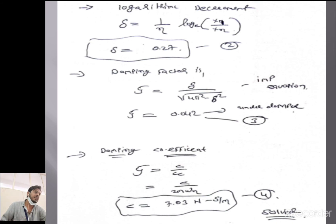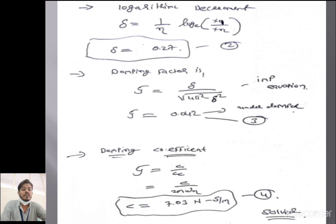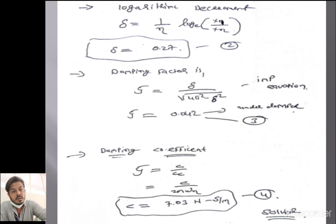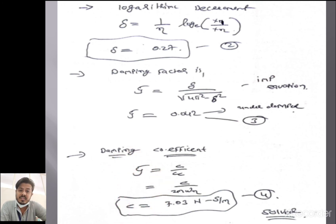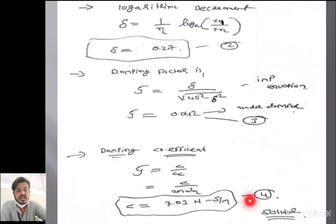The last thing remaining is the damping coefficient c. We use ζ = c/cc, where cc = 2mωn. With m = 8 kg and ωn = 10.47 rad/s, we find cc, and then using ζ = 0.042 we get c = 7.03 N·s/m. Remember, the unit of damping coefficient c is newton-second per meter, not newton-meter per second.